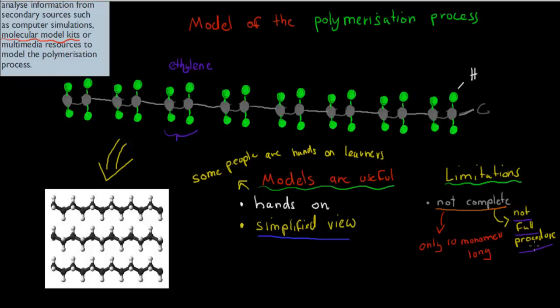And the other reason that I gave was that it's not the full procedure. So remember, for these procedures there's usually a catalyst or a radical involved. There's heat involved. There's pressure involved. So because it's a simplified view, we can't get the full picture in terms of the model itself. But it does give us some basic understanding. So models are quite useful.